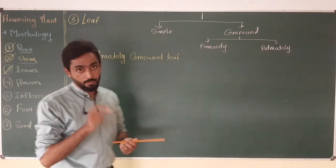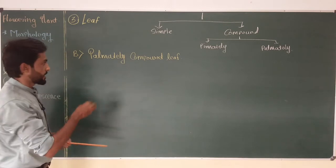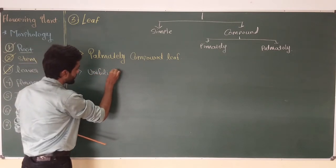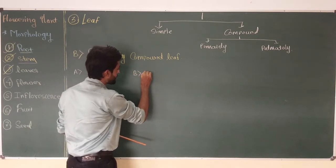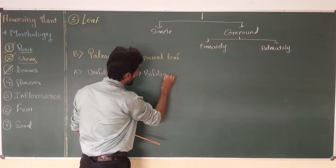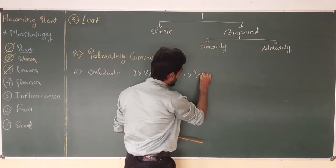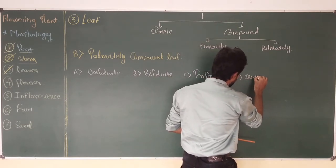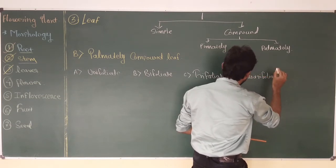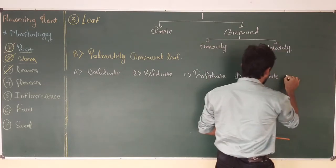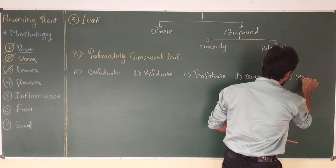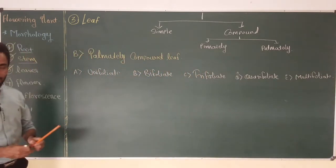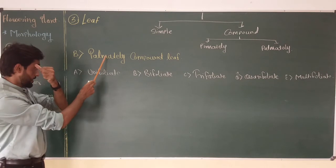On the basis of the number of leaflets present in the palmately compound leaf, there are five different types. The first type is unifoliate, second is bifoliate, third type is trifoliate, fourth type is quadrifoliate, and the last type is multifoliate. In this video we are going to talk in detail about these five types and their examples, which come under palmately compound leaf.